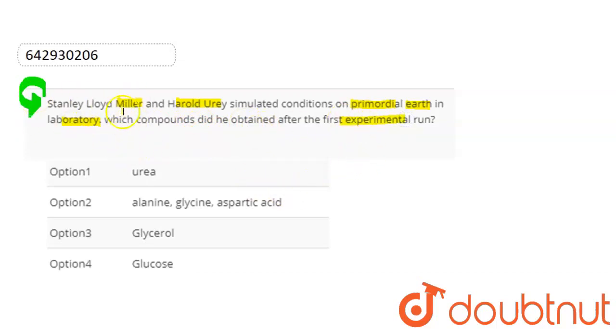So here you can say that Stanley Lloyd Miller and Harold Urey conducted an experiment simulating primordial earth conditions in the laboratory. We can represent the early atmosphere with a mixture of gases, then pass a spark through the gases to represent lightning.